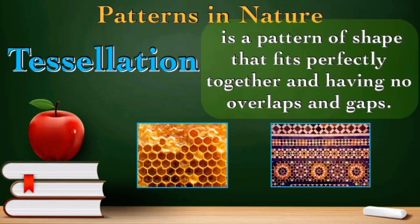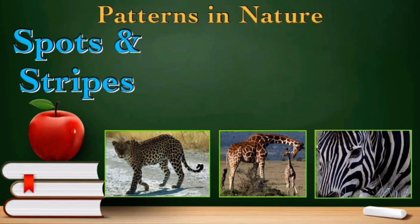Next are tessellations. Tessellation is a pattern of shapes that fit perfectly together, having no overlaps and gaps. For example, we have here the honeycomb or even our floor tiles. These are examples of tessellation.